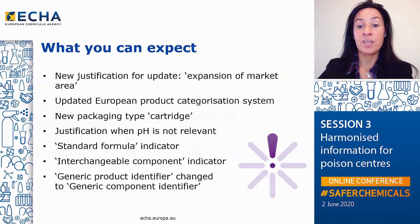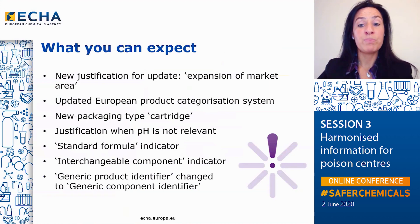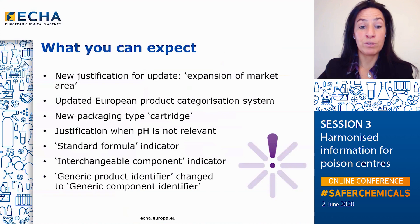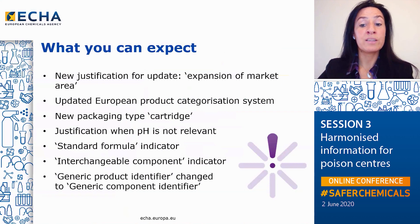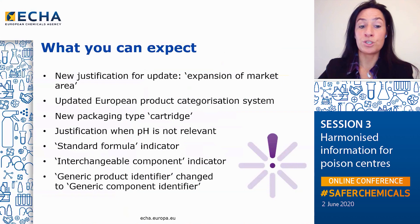When you want to update your dossier including one or more market areas, you will have the possibility to indicate so in the justification for update available in the dossier header. The EU product categorization system will be updated to indicate the product's main intended use. And when describing the product, you will find Cartridge as a new packaging type available for selection. A number of format changes coming from the amendments to Annex 8 will also be available. When the pH of the mixture is not relevant and a reason has to be indicated, the new Poison Centers format will include the possible reasons industry needs to select. You will find the possibility to include standard formulas and to indicate interchangeable components in your mixture composition. Finally, as required by the legal text, generic product identifier will be changed to generic component identifier.